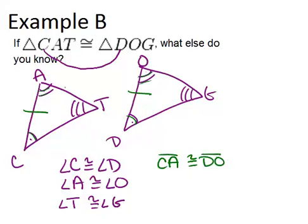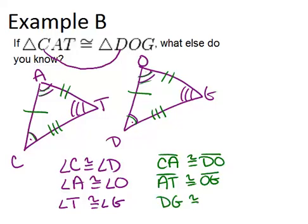Going around the triangle, next we hit AT and OG, which also have to be congruent. And finally, CT and DG are congruent as well.